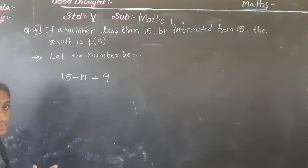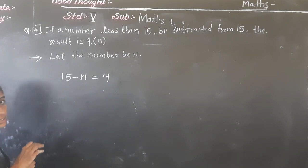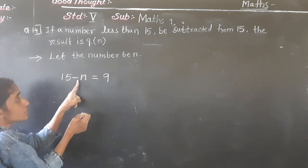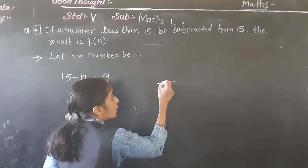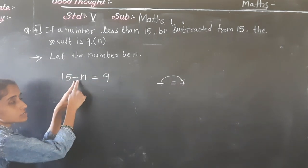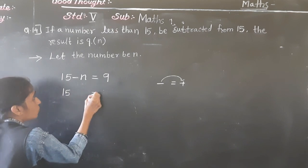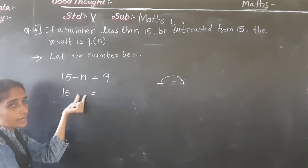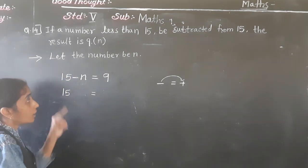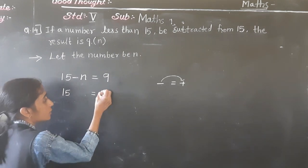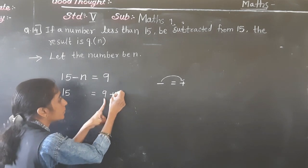Now applying the rules: N is here with a minus sign. If here it is minus and we transfer to the right hand side, it becomes plus. So I transfer minus N to the right hand side. Right hand side number 9 stays as it is. Then it becomes plus N on the right. So: 15 = 9 + N.